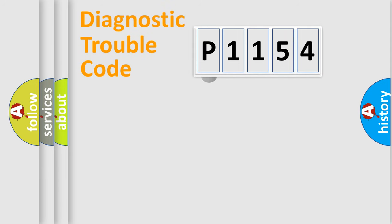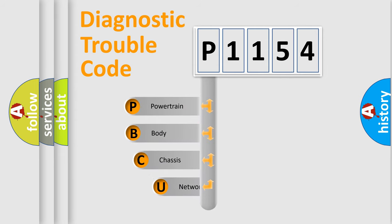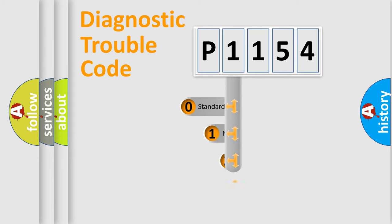First, let's look at the history of diagnostic fault code composition according to the OBD2 protocol, which is unified for all automakers since 2000. We divide the electric system of the automobile into four basic units: Powertrain, Body, Chassis, and Network. This distribution is defined in the first character of the code.